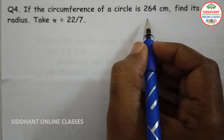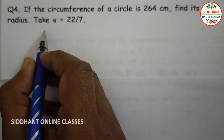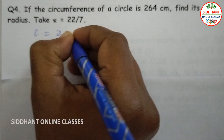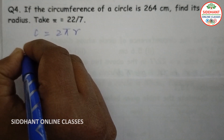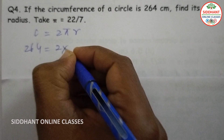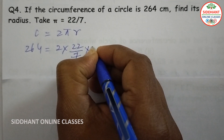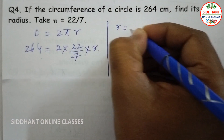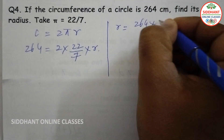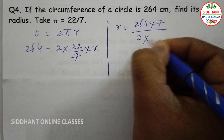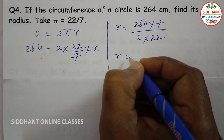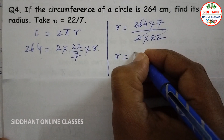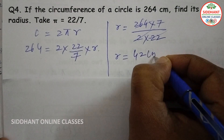Question number four: if the circumference of a circle is 264 centimeters, find its radius taking pi as 22/7. Circumference equals 2 pi r, circumference given is 264, so 264 equals 2 into 22/7 into r. Radius equals 264 into 7 by 2 into 22. After cancellation we get 42 centimeters.